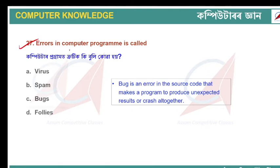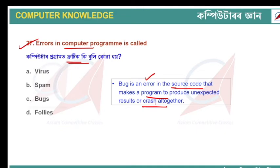Errors in a computer program are called bugs. For example, if you are using computer code and there is a mistake in the code, that error causes unexpected results in the program. Errors in a computer program are called bugs.